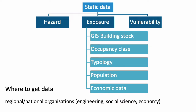The second layer required as static data is everything that defines the existing exposure system, starting with the building stock in your region or infrastructures. You need those data integrated in the system with GIS coordinates of all buildings and infrastructure. You also identify the typology, which allows better estimation of the potential physical impact of an earthquake, and the occupancy class, which is linked to the number of people inside or outside that building, plus the population distribution.